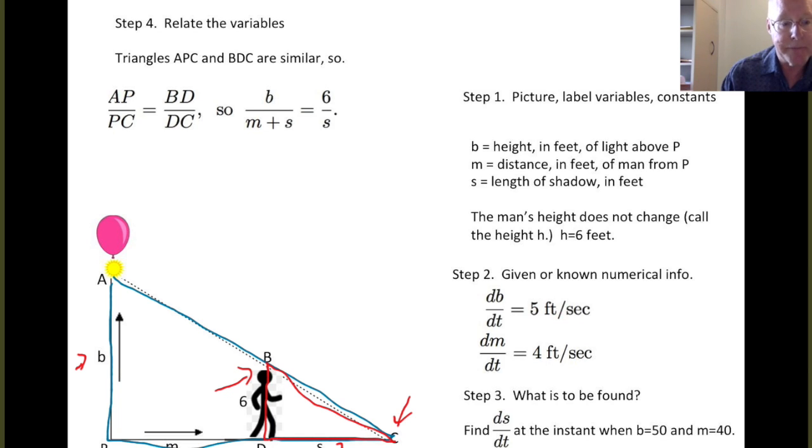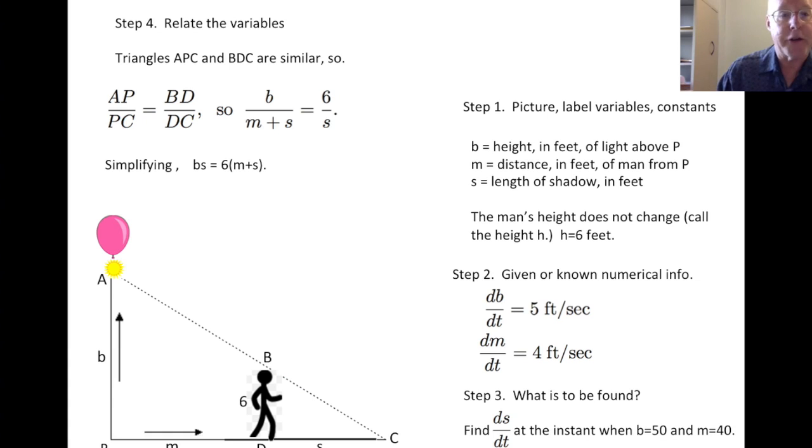If we convert those into lengths as described by the variables, AP has length B. PC, let's see from P out to C, we have this distance that includes M plus S. And so PC is equal to M plus S. BD is 6. And finally, DC is S. And so our variables are related by the ratio, you see up here, B/(M+S) equals 6 over S. We're going to work with that relationship. We're first going to simplify it a little bit. If we clear fractions, multiply both sides by S times M plus S, we find the simpler looking relationship, BS equals 6 times M plus S. So that's the relationship between the variables in question, the two changing quantities, B and M, and the S, the length of the shadow, whose rate of change you wish to find.